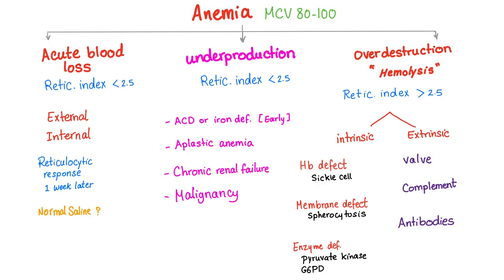First, I would like to answer the question from the previous video on aplastic anemia. The answer to that question will be D — phenytoin. Now, back to anemia and chronic kidney disease.